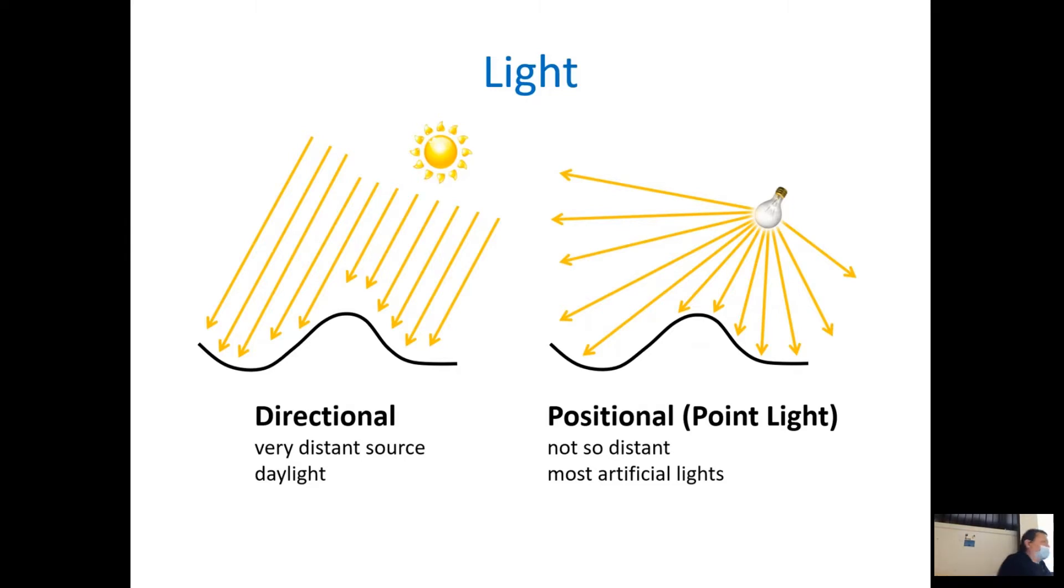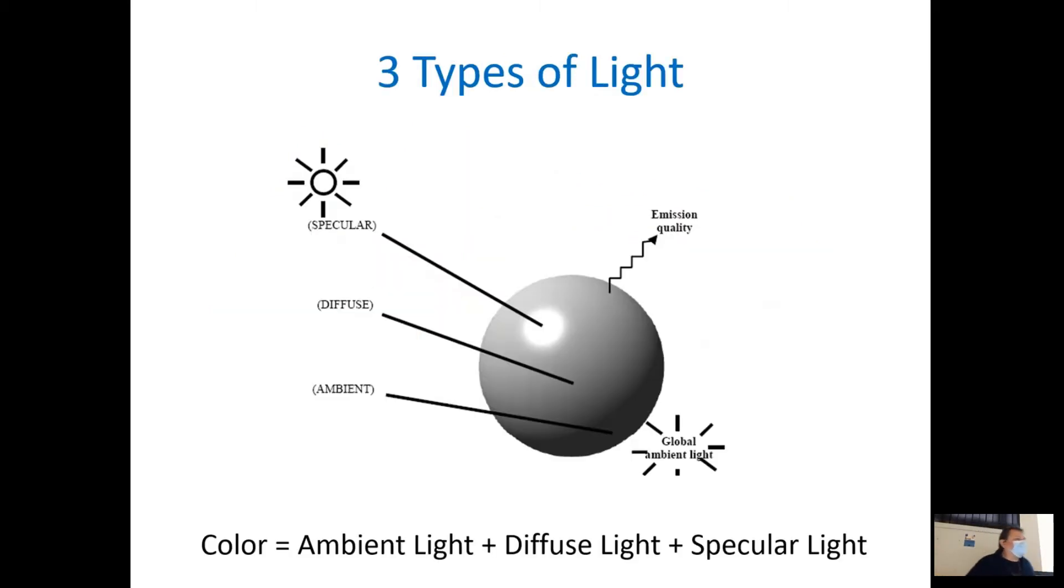So in directional light, this direction is provided directly. And in case of positional light, you will have to calculate it. Also, we have three other types of light. So basically, this classification between directional and point light is mostly about this diffuse light.